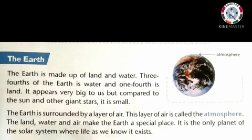The Earth is made up of land and water. Three-fourths of the Earth is water and one-fourth is land. It appears very big to us, but compared to the Sun and other giant stars, it is small. The Earth is surrounded by a layer of air — this layer of air is called the atmosphere. The land, water, and air make the Earth a special place.